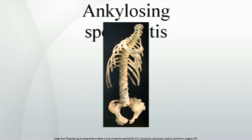Complete fusion results in a complete rigidity of the spine, a condition known as bamboo spine. There is no cure for AS, although treatments and medications can reduce symptoms and pain. It falls under the group of seronegative spondyarthropathies, distinguished by a negative rheumatoid factor. Other seronegative spondyarthropathies include psoriatic arthritis and reactive arthritis.